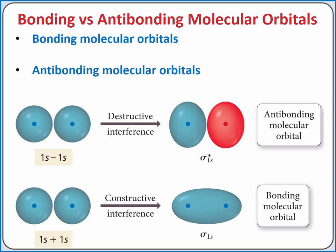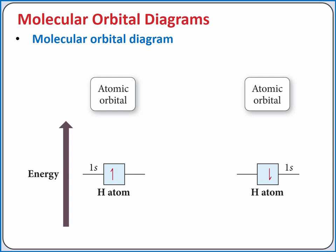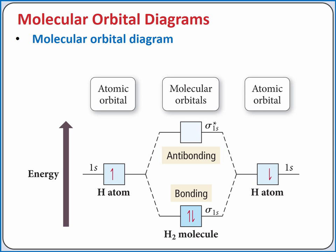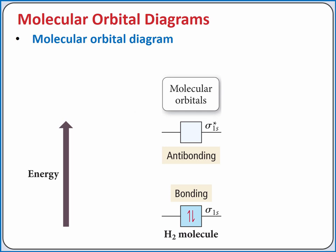Let's use a molecular orbital diagram to represent the hydrogen molecule. We start with two hydrogen atoms, each with one electron in the 1s subshell, and combine these two atomic orbitals to produce two molecular orbitals spanning the entire molecule — a bonding molecular orbital and an antibonding molecular orbital. The bonding molecular orbital is always lower in energy. The two electrons are now in the bonding molecular orbital, and the atomic orbitals are used up, just as in the hybridization process of valence bond theory.